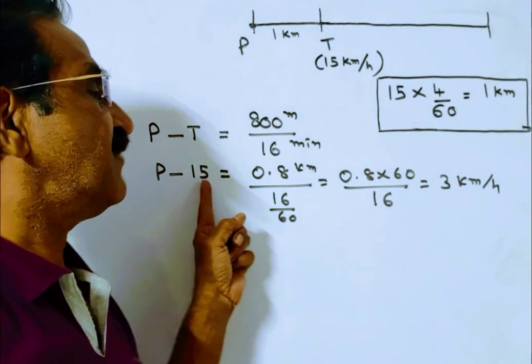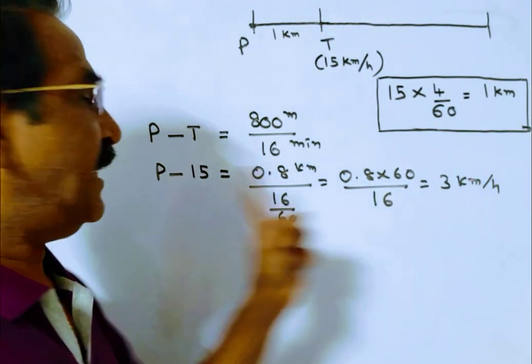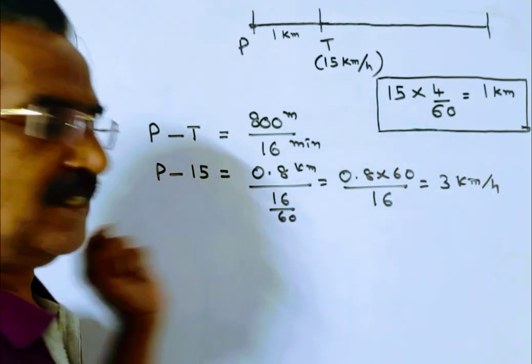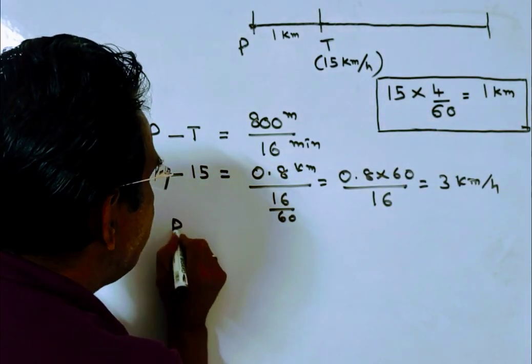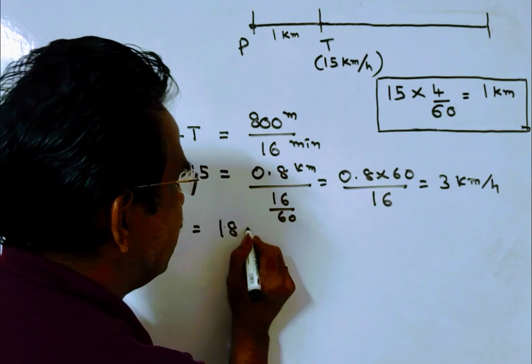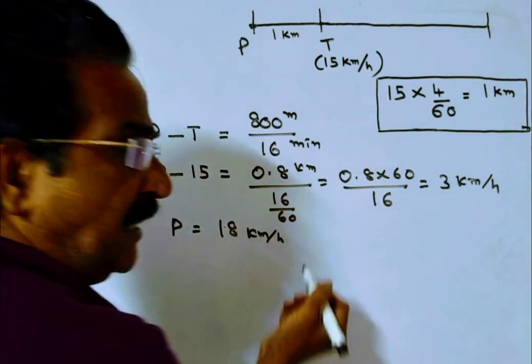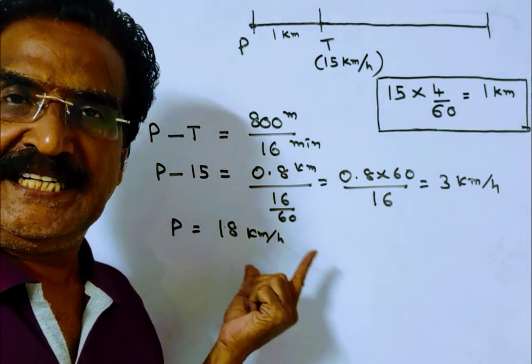P minus 15 equals 3 kmph. So P equals 15 plus 3, which is 18 kmph. The speed of the policeman is 18 kmph.